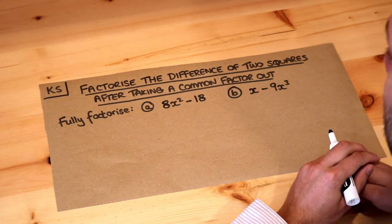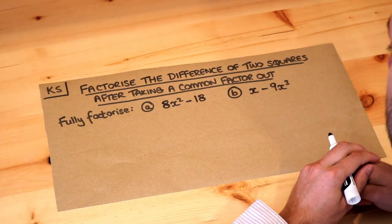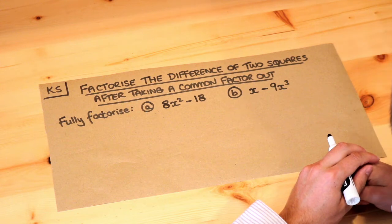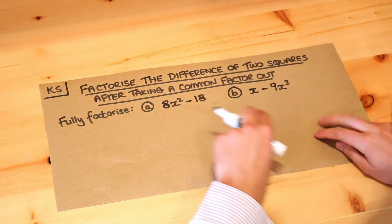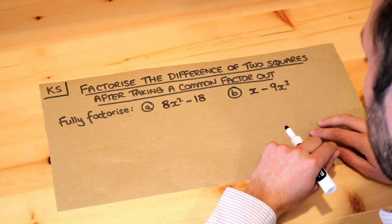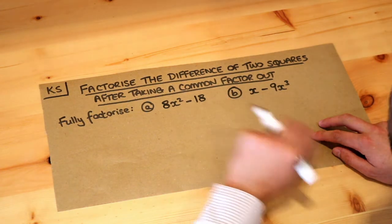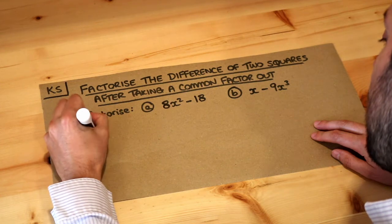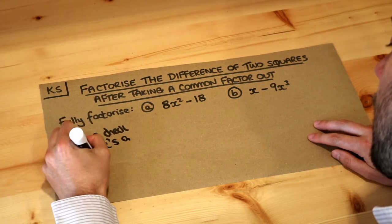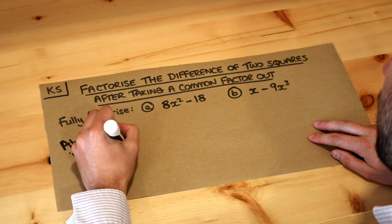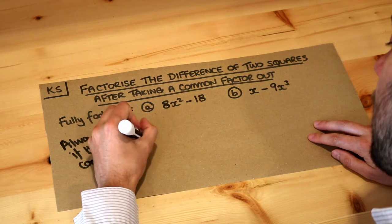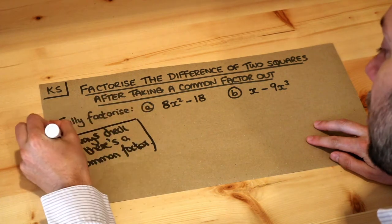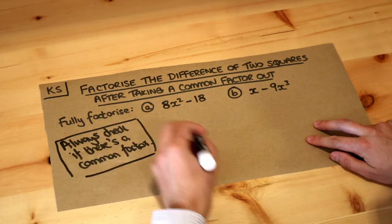Hello and welcome to this Dr Ross Mass's key skill video on factorising the difference of two squares after taking a common factor out. Now, with more complicated expressions that we want to factorise, always check first whether we have a common factor. Always check if there's a common factor, and once you've factorised out the common factor, there may be other techniques of factorisation that we can use. So let's see what's going to happen.